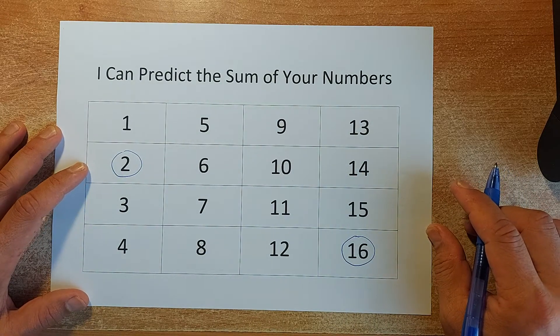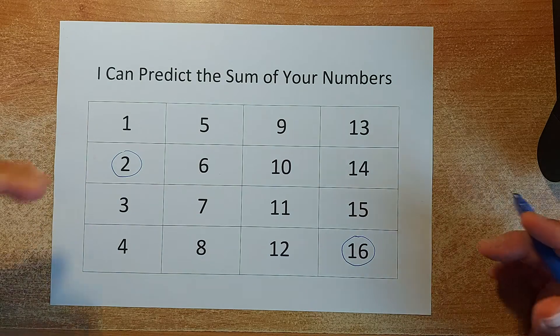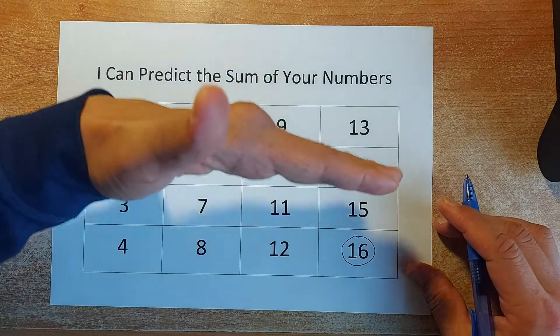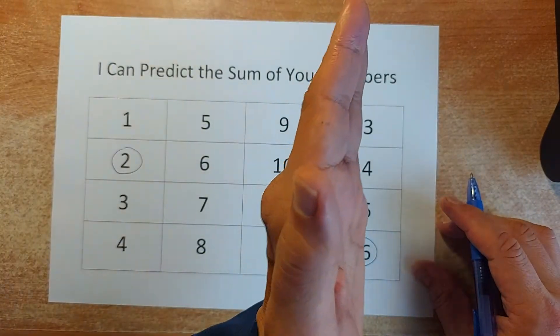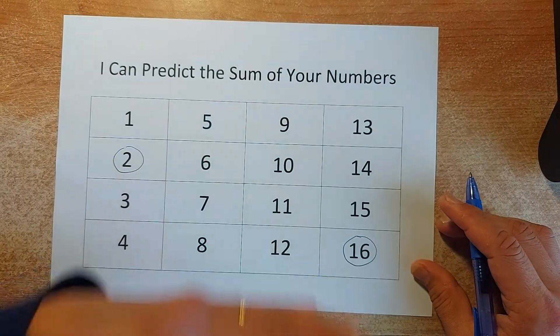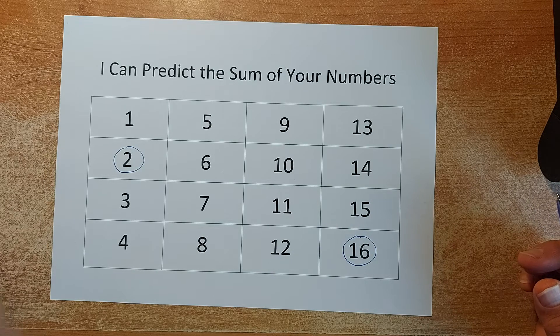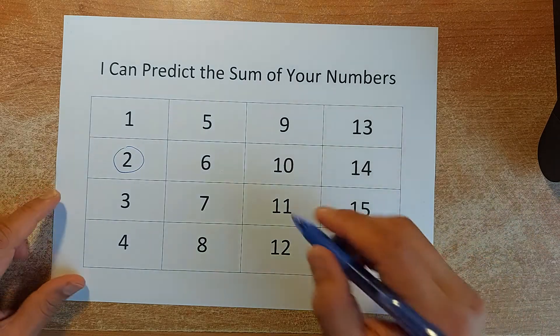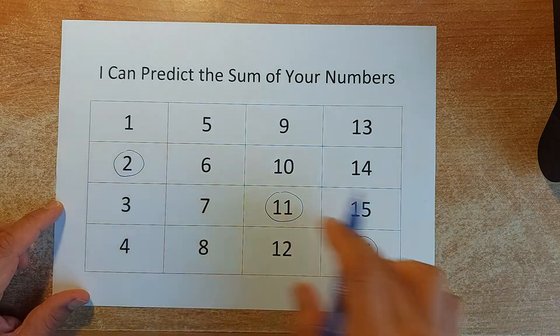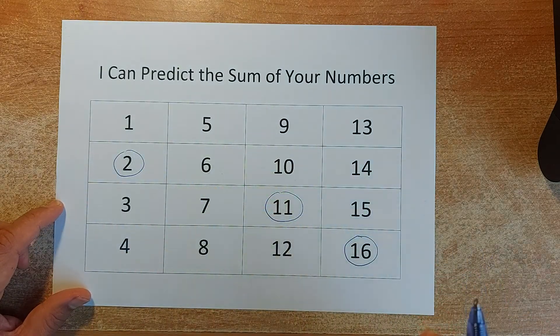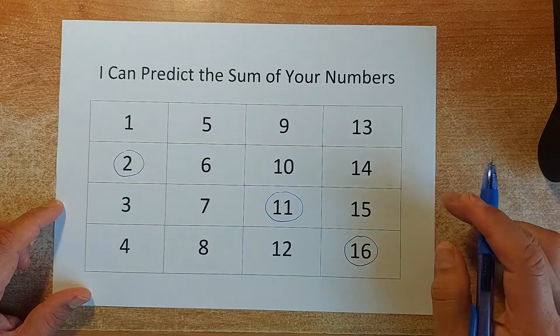So far so good. Then we do the third number. The same thing. You cannot choose any number that is the same row or column as 2. And at the same time, it cannot be the same column and row of 16. So what number can you choose? Maybe I want to choose 11. Is 11 possible? I think it's possible because they are not the same column and row of 2 and 16. So that is your third number.